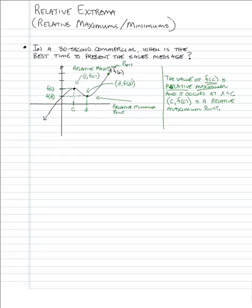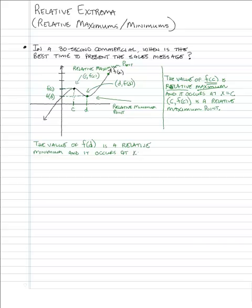It's important to recognize: the value of f of d — which is a y number — is a relative minimum. So it's the number that's the y value that is the minimum. And it occurs at x equals d. Further, we could say d comma f of d is a relative minimum point.